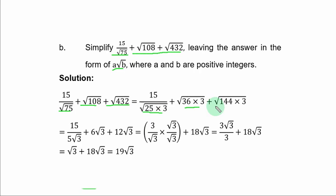So you have 15 over 5 root 3, because root 25 is 5. So you have 15 over 5 root 3 plus 6 root 3 plus 12 root 3. Now if you divide 15 by 5, you have 3 remaining. In order to simplify this term, you rationalize by using root 3 to multiply the numerator and denominator. Just this first term you are doing that for. Meanwhile, these surds are alike. When you add them, you have 18 root 3.